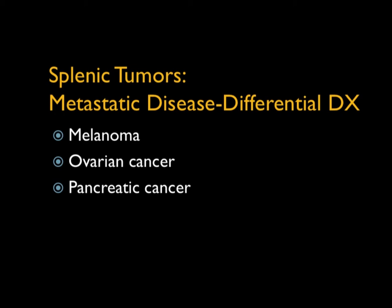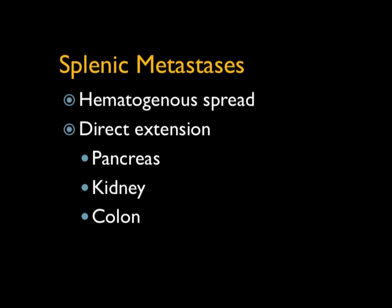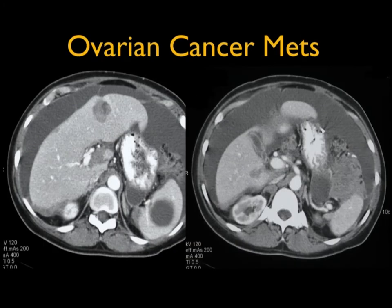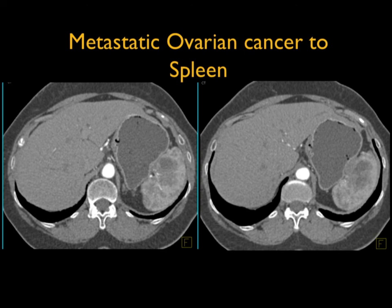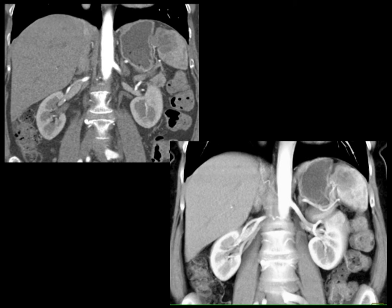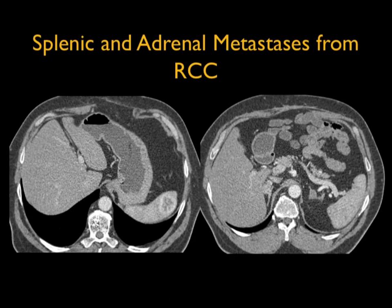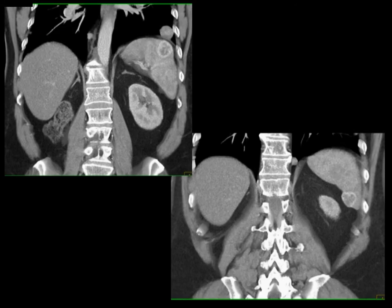When we talk about splenic tumors, we talk more about metastasis, but primary tumors like angiosarcoma do occur. When you talk about splenic metastasis, melanoma, ovarian cancer, and pancreatic cancer top the list. We talk about hematogenous spread and direct extension, which is more common for pancreas, kidney, and colon. Here's a good example of ovarian cancer with widespread ascites, implants on and in the spleen and liver — very much classic ovarian cancer. Another example shows mass on the surface of the spleen growing directly into it. Here's an example of splenic metastasis in a patient with renal cell carcinoma — particularly clear cell type has vascular mets, which can occur though uncommonly in the spleen.